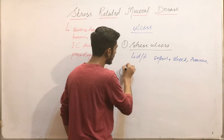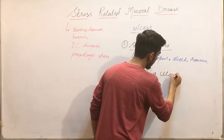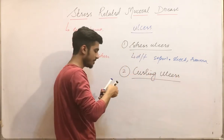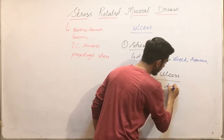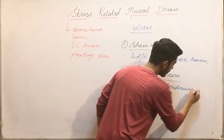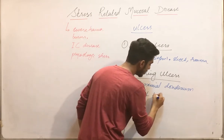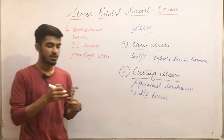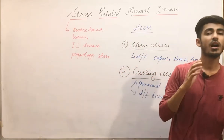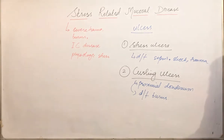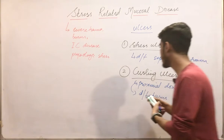The second type is curling ulcers. Curling ulcers are basically found in the proximal duodenum, and they occur due to burns — burns are their main cause. In a severe burn, there will be hypovolemia and necrosis, which results in damage to the mucosa. This is the curling ulcer.